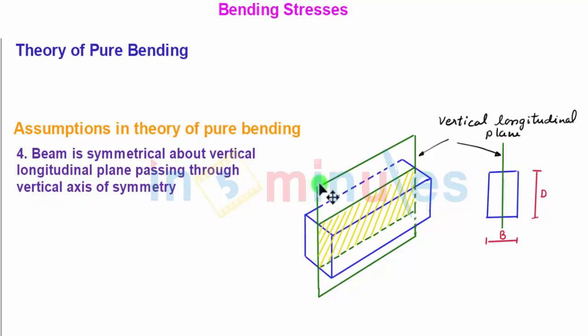Fourth assumption: the beam is symmetrical about the vertical longitudinal plane passing through the vertical axis of symmetry. For the beam we have this vertical longitudinal plane in the longitudinal direction, and the beam is completely symmetrical about this plane, as is evident from this side view.